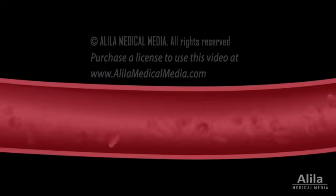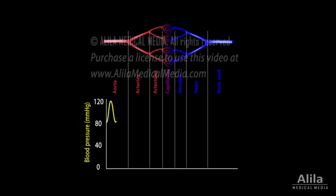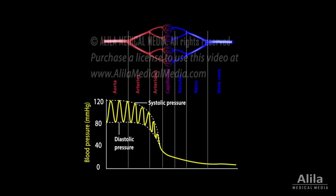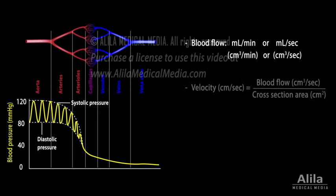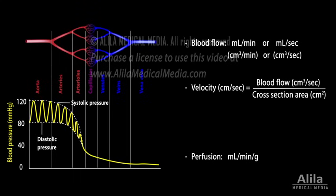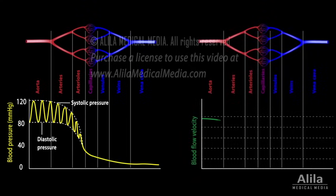Blood pressure is the force the circulating blood exerts on the walls of blood vessels. It is highest when blood exits the heart and decreases as it moves away. Blood flow is the amount of blood passing through a tissue or vessel in a given time. Perfusion is the flow per given volume or mass of tissue. Flow is directly proportional to the pressure difference between two points and inversely proportional to resistance. Blood flow is highest in the aorta and large arteries, lowest in capillaries, and somewhat higher in veins.